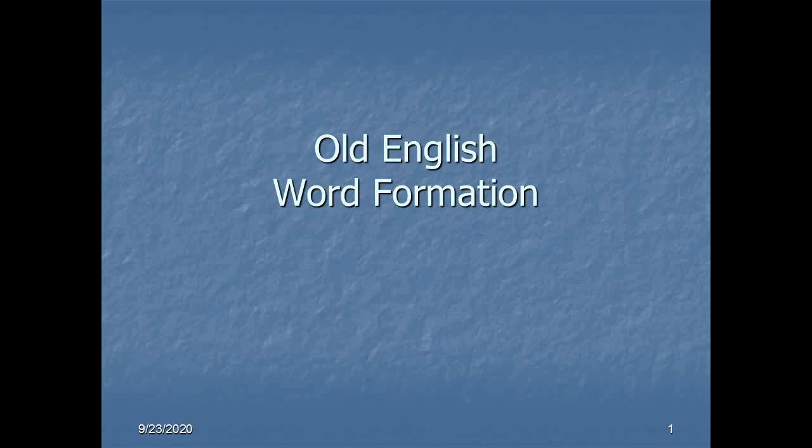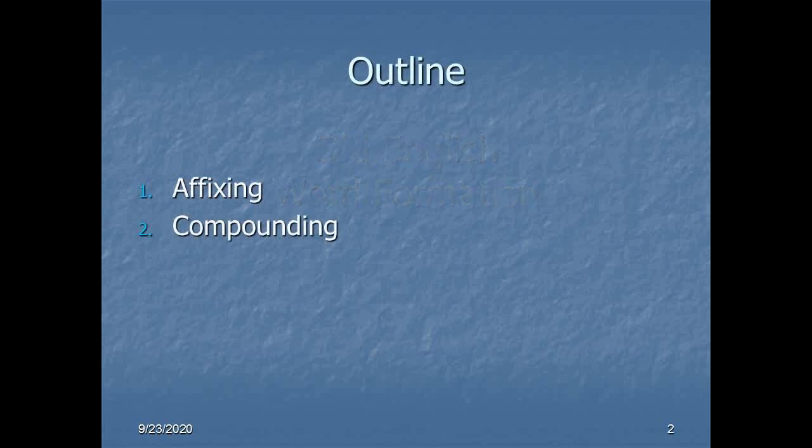So how did the Anglo-Saxons make their words, make the words that they had work for them when they came across some idea that they hadn't quite grasped before? How do you make new words? Well, the principal strategies for the Anglo-Saxons boil down to two things, affixing and compounding. Affixing is simply adding things on to words you already know, and compounding is mashing two words together. Very simple. And while many languages still do that, contemporary English doesn't tend to do it quite as much as you might think.